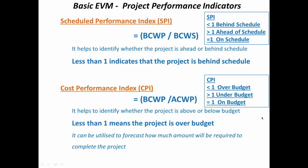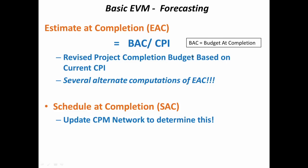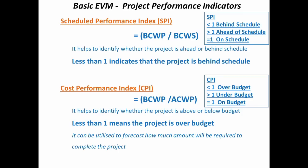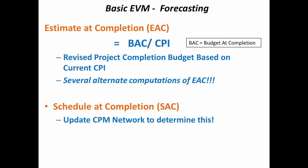One more critical parameter in earned value is forecasting. We should be able to use performance measures to forecast where we are going to finish. CPI gives the cost performance index; taking budget at completion (BAC) divided by CPI gives the revised project completion budget — the estimated cost at completion.